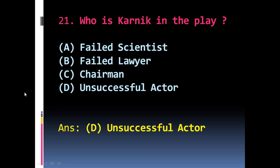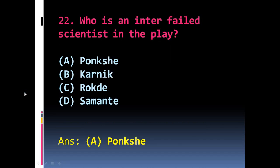Question 21: Who is Koenig in the play? The options are A) Failed scientist, B) Failed lawyer, C) Chairman, D) Unsuccessful actor. The right answer is D) Unsuccessful actor.